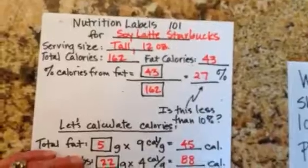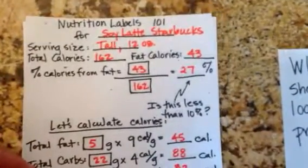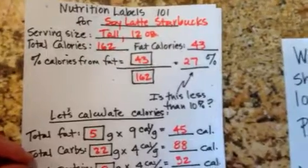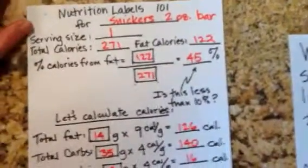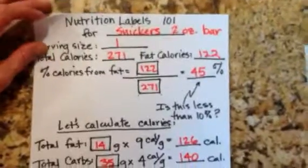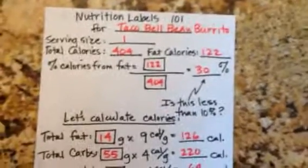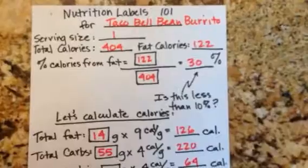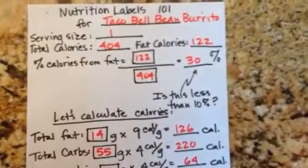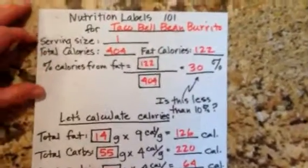Let's look at some things we might treat ourselves to every now and then. A tall Starbucks soy latte — not too bad, but it's just a small one. A regular size Snickers bar — 122 fat calories, so you're almost at your fat allowance for the entire day. A Taco Bell bean burrito — also 122 fat calories. When I used to go to Taco Bell, I'd get two bean burritos and a bean chalupa, and I'm sure I was exceeding 400 fat calories in just that one meal.